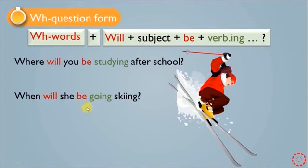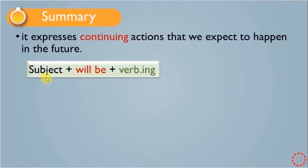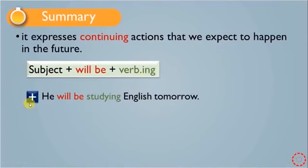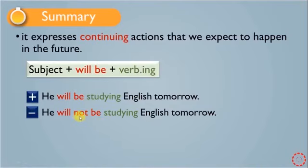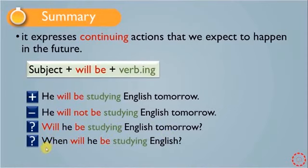To summarize: we use Future Continuous to express continuing actions that we expect to happen in the future. The general structure is: subject + will be + verb+ing. For example, the positive form: 'He will be studying English tomorrow.' We negate it by adding 'not': 'He will not be studying English tomorrow.' For the question form, we move 'will' to the beginning: 'Will he be studying English tomorrow?' And for WH-questions, we add the question word first: 'When will he be studying English?' That's all — thanks everyone.